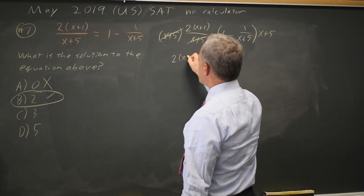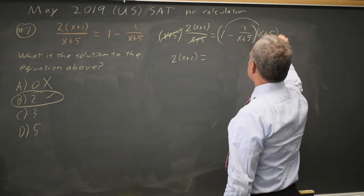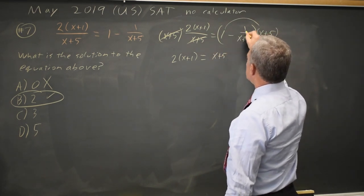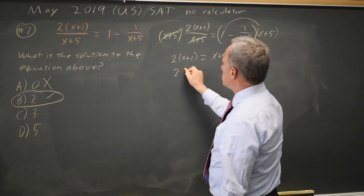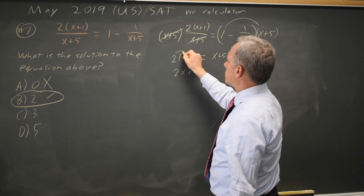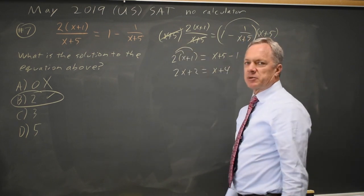That leaves me 2 times x plus 1. On the right, I have 1 times x plus 5 minus 1 over x plus 5 times x plus 5 is minus 1. So that's 2x plus 2, if I distribute the 2, equals x plus 4, which is the same expression I had before.